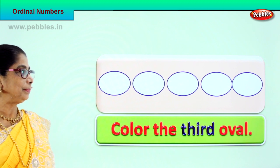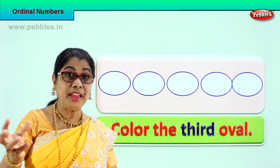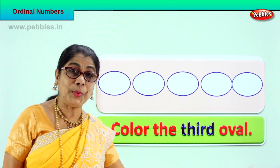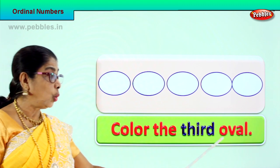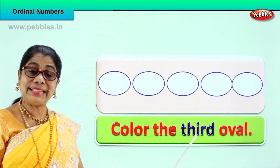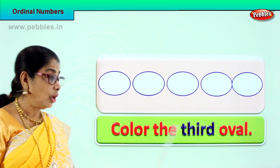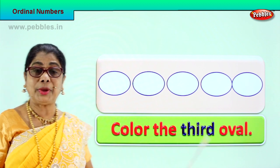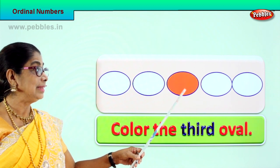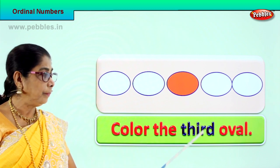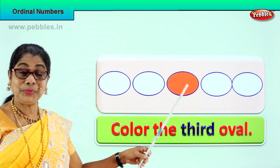Shall we take another exercise? We have lots of oval shapes here — one, two, three, four, five. There are five oval shapes. Let's read what we have here: color the third oval. Spell third: T-H-I-R-D. Third. We are asked to color the third oval shape. First, second — this is the third. We are going to color the third oval. We have put a nice orange color. Spell third: T-H-I-R-D. Third. We colored the third oval shape.